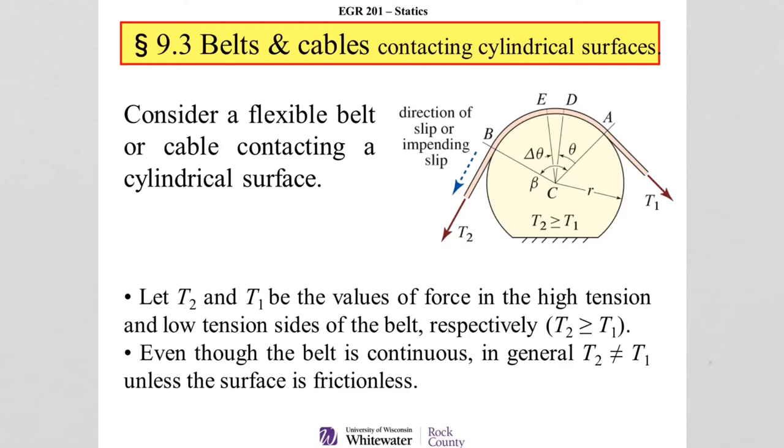If we look at this, this goes through some specific derivations I'm not going to spend a lot of time on, but it says, let T2 and T1 be the values of force in the high tension and low tension side of the belt, respectively.